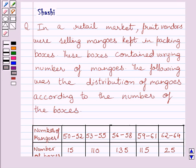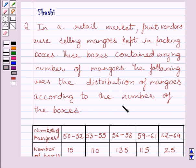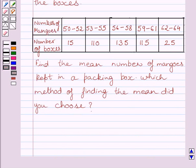Hello and welcome to the session. Let us discuss the following question. In a retail market, food vendors were selling mangoes kept in packing boxes. These boxes contained varying numbers of mangoes. The following was the distribution of mangoes according to the number of boxes. This is the given table which represents the distribution of the mangoes. Find the mean number of mangoes kept in a packing box.